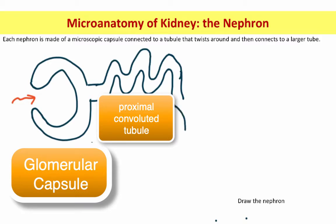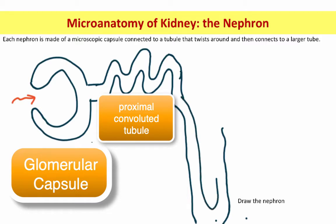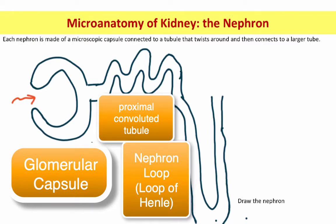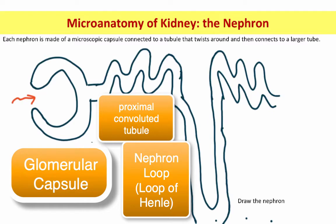That leads into a loop that dips way down into the medulla of the kidney. This loop is called the nephron loop. Some people call it the loop of Henle because he's the person who first described it. The nephron loop is easier to remember and also more accurate. The nephron loop dips down into the medulla and then comes back up into the cortex.